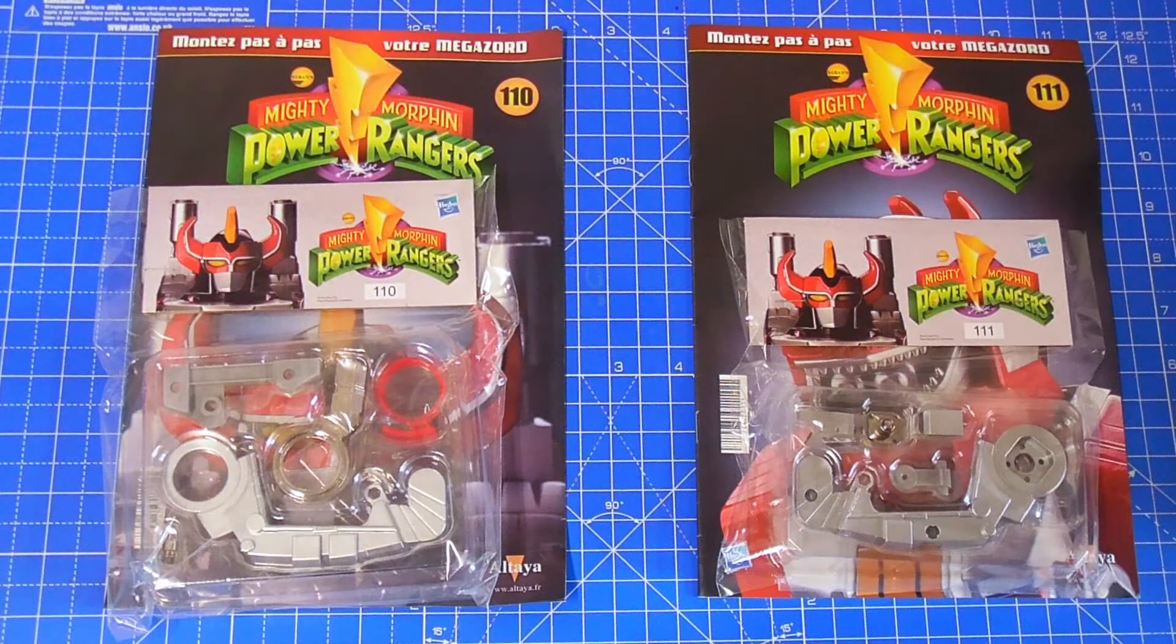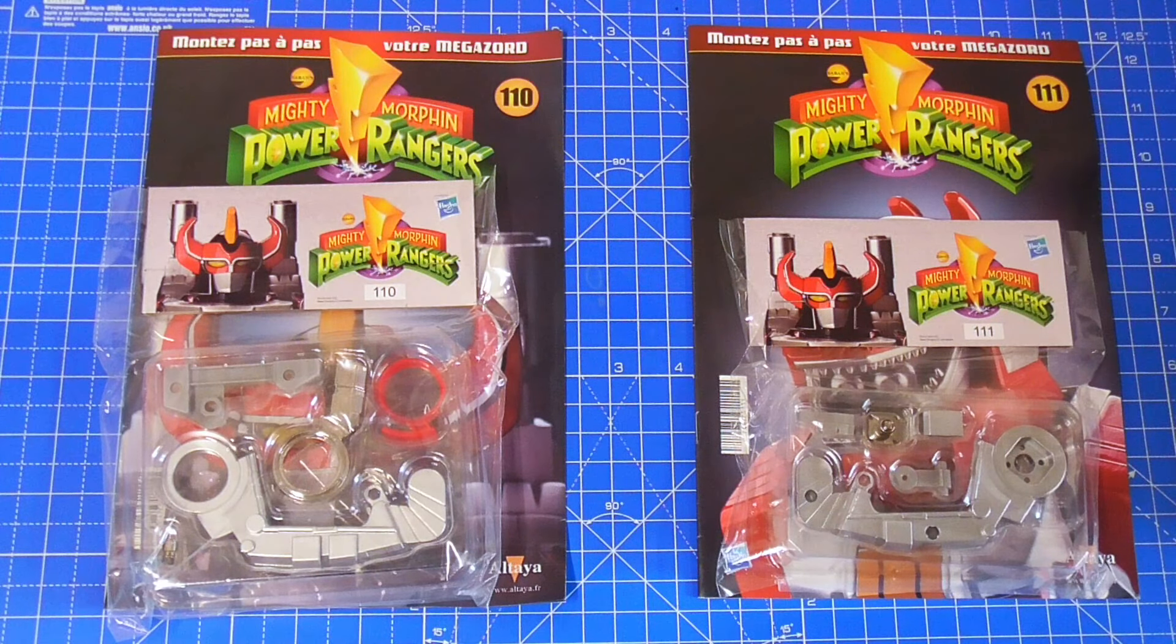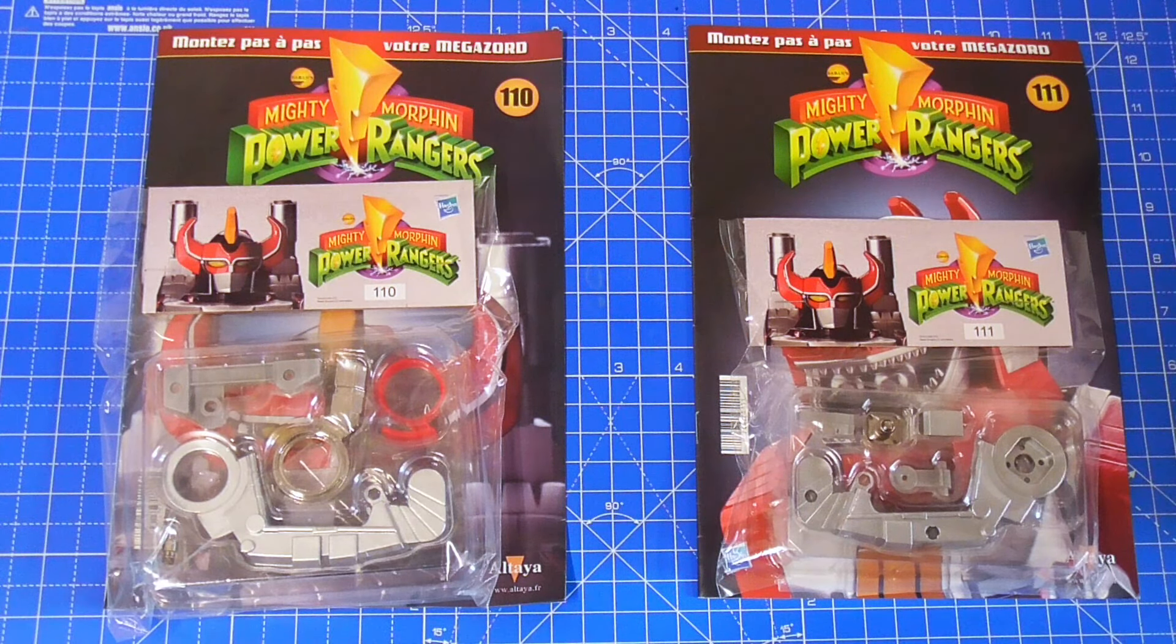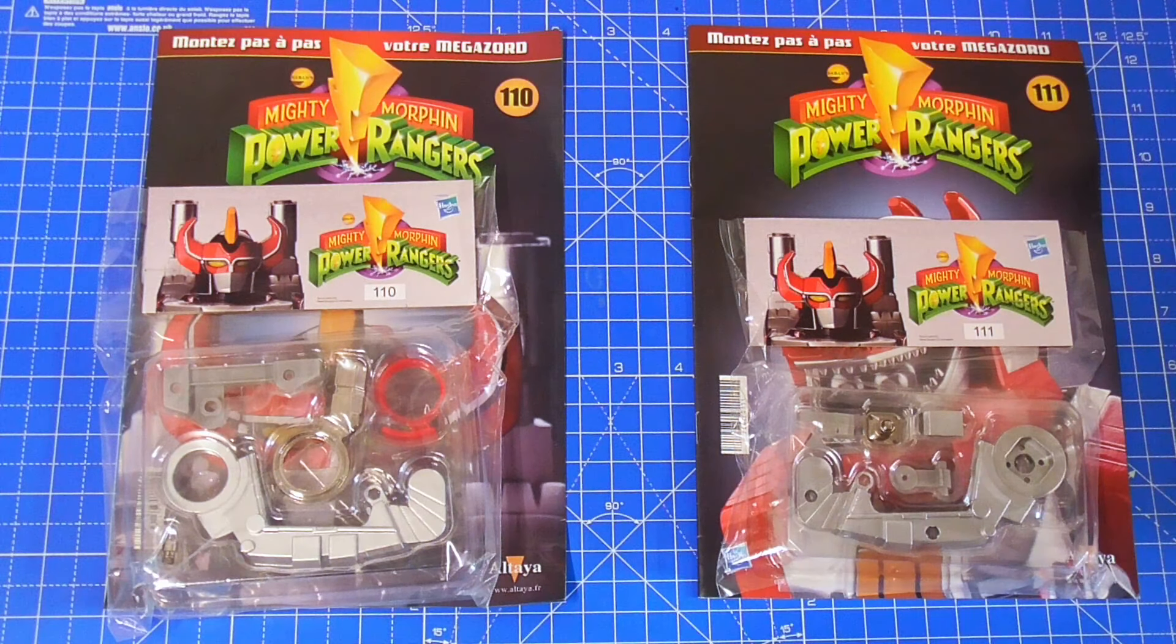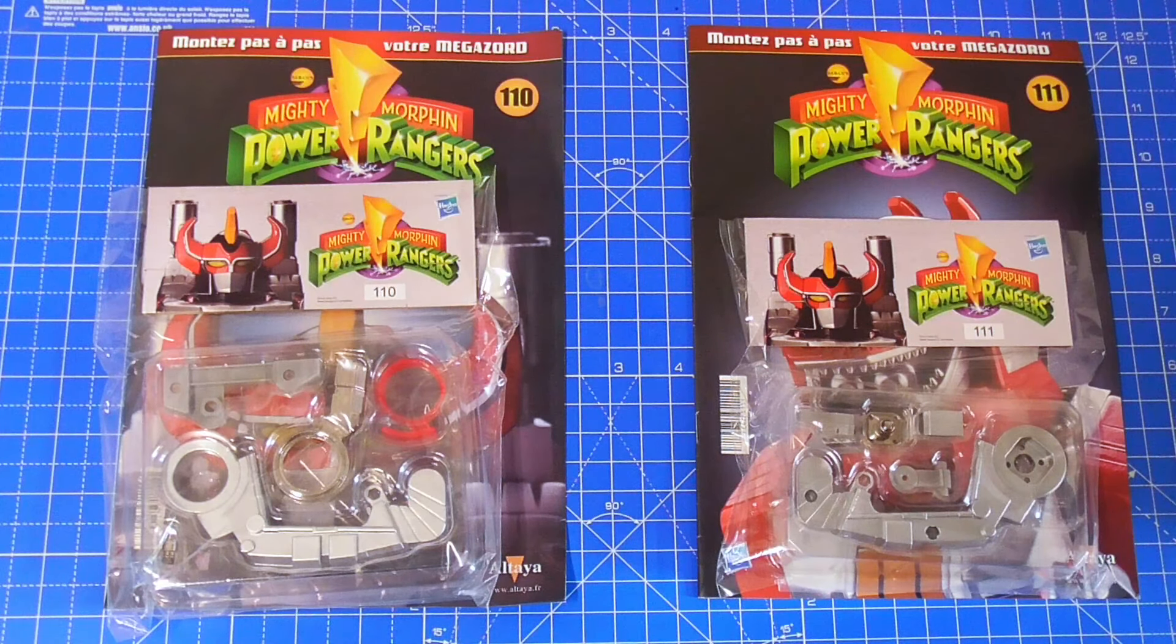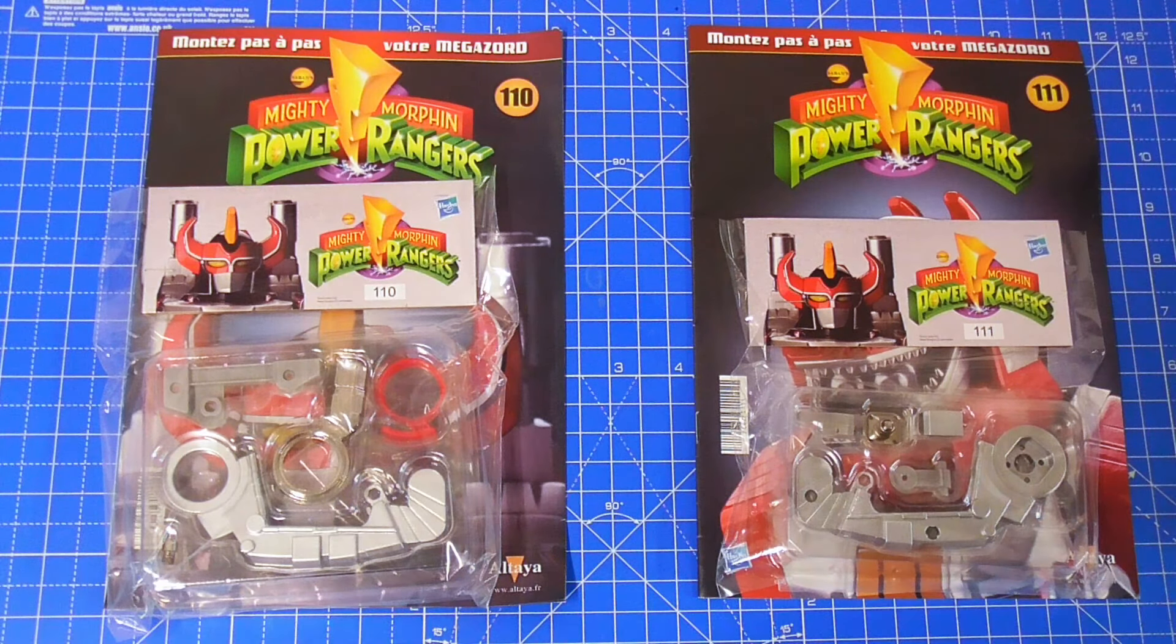Hello and welcome to the next episode of Build the Megazord, where we're looking at issues 110 and 111 this time. Yes, two issues in one, because as we're entering the last 10 issues of the Megazord, I just want to get it built, I just want to get it complete. So there will be multiple issues thrown together for the rest of this video series. We are starting on the last and final leg, the second leg of the T-Rex, because the T-Rex only has two legs.